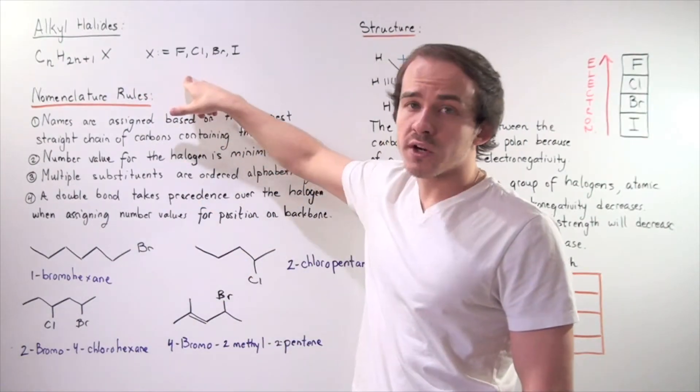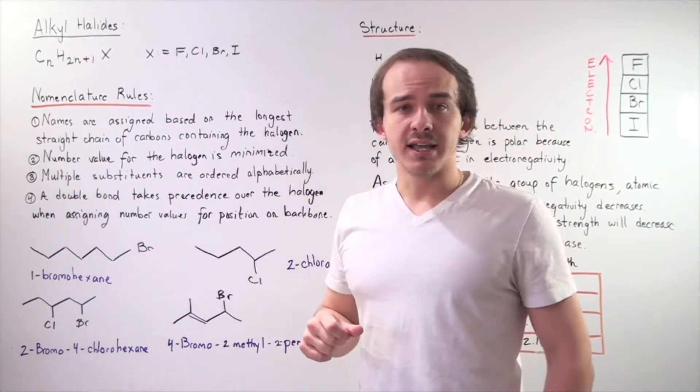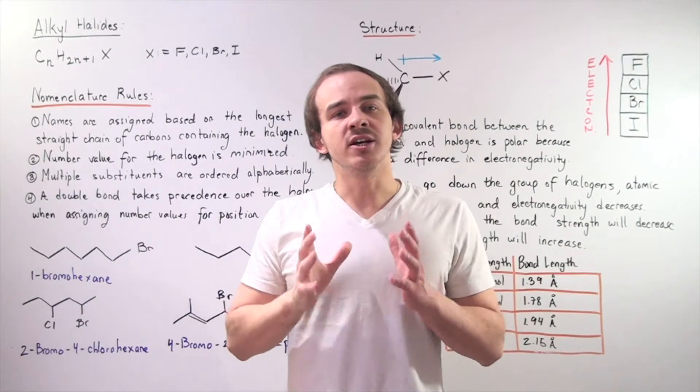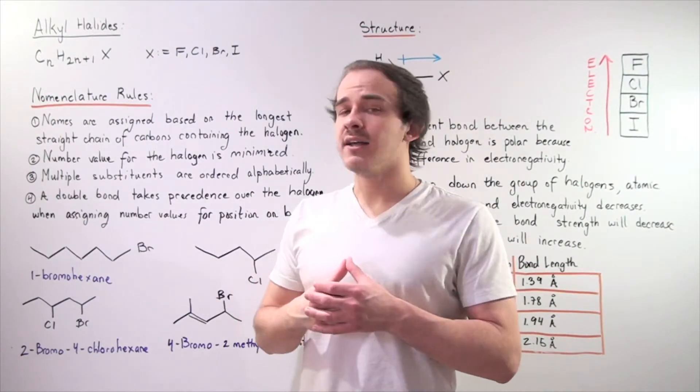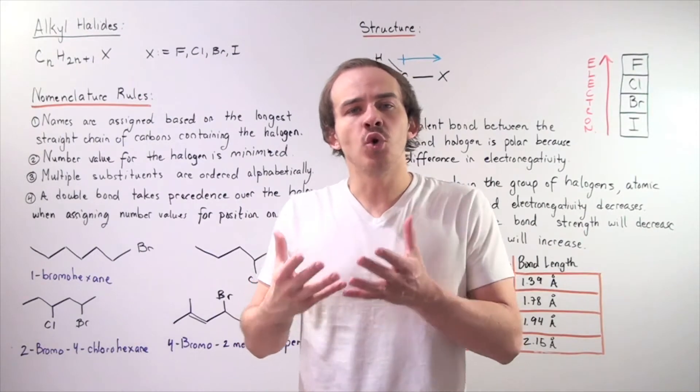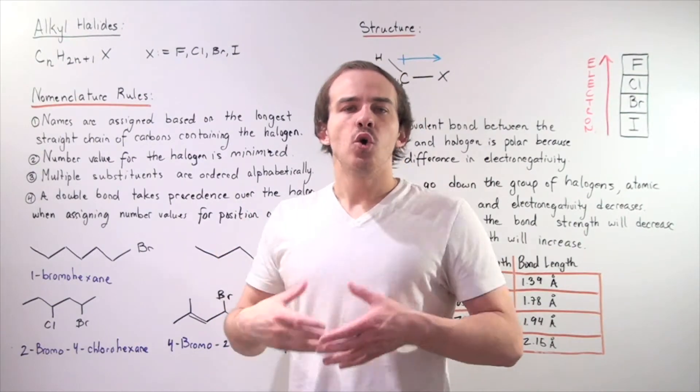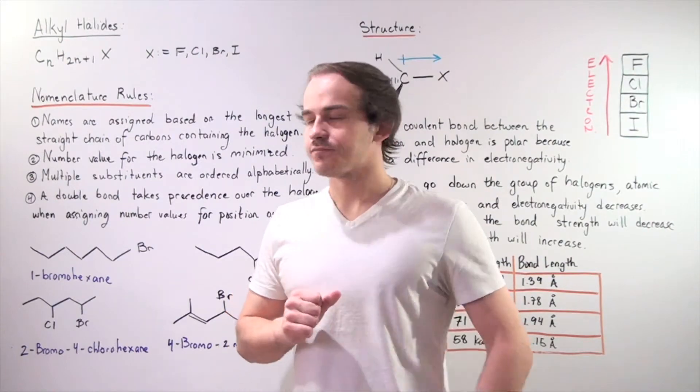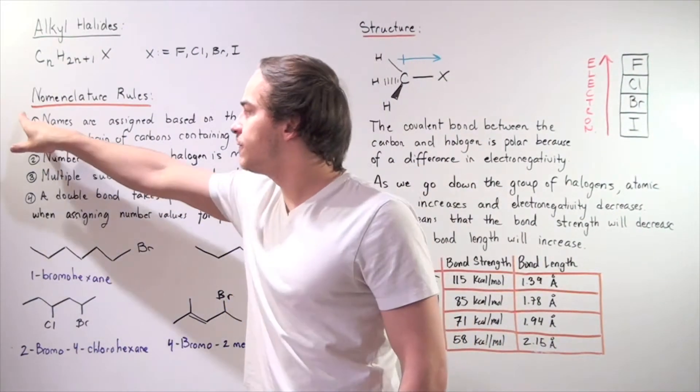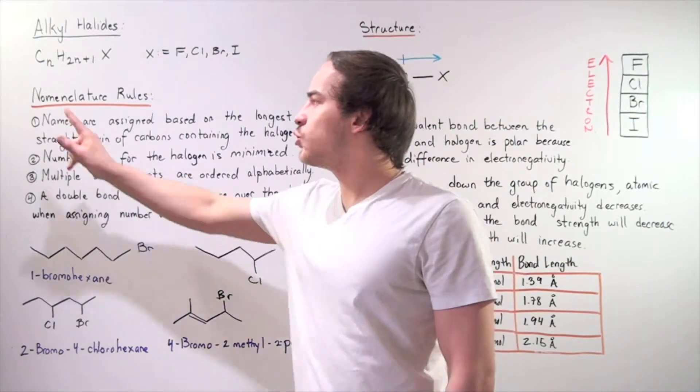It's either fluorine, chlorine, bromine, or iodine. Let's begin by looking at the nomenclature rules for our alkyl halides. In other words, what rules do we have to follow when we're naming compounds that contain halogens?